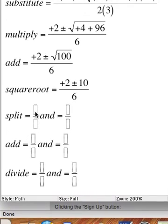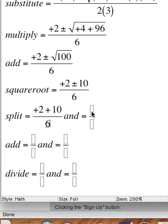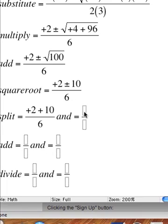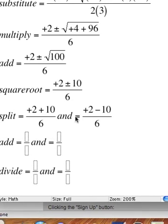The first part will be positive 2 plus 10 divided by 6. Now since I added 10 once, now you know what I'm going to do next. It will be plus 2 minus 10 divided by 6.